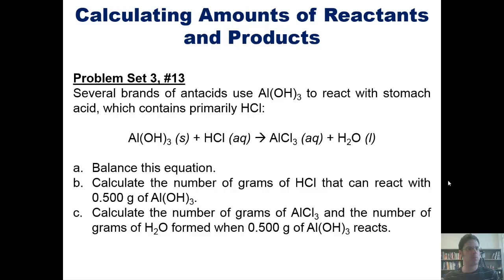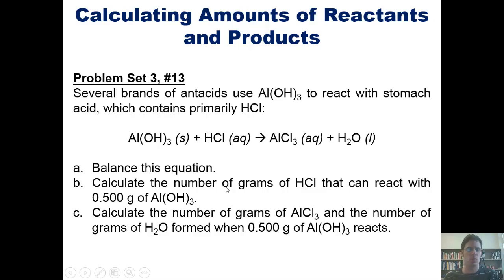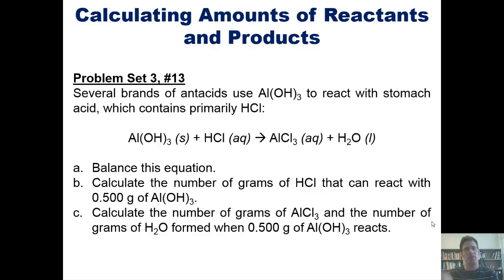Now, to another problem. Several brands of antacids use aluminum hydroxide to react with stomach acid, which contains primarily HCl, and in doing so undergoes this reaction. I want you first to balance this equation. Then calculate the number of grams of HCl that can react with 0.5 grams of aluminum hydroxide. Afterwards, calculate the number of grams of aluminum chloride and the number of grams of water formed when 0.5 grams of aluminum hydroxide reacts. I'm not going to do this problem for you here, but you can click a link here to a separate video where I'll show you how to do it on the doc cam.